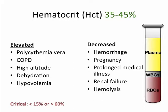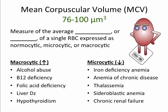The mean corpuscular volume, or MCV, measures the average volume or size of a single red blood cell, expressed as normocytic, microcytic, or macrocytic. A macrocytic, or large, red blood cell can be found in alcohol abuse, B12 deficiency, folic acid deficiency, liver disease, and hypothyroidism. Microcytic cells can be found in iron deficiency anemia, anemia of chronic disease, thalassemia, sideroblastic anemia, and chronic renal failure.